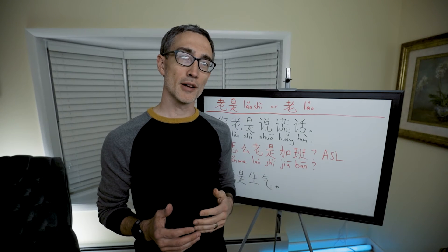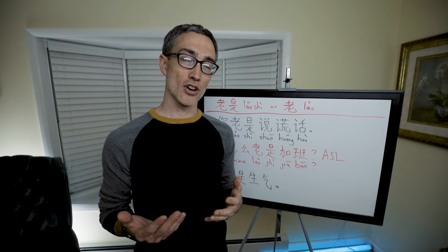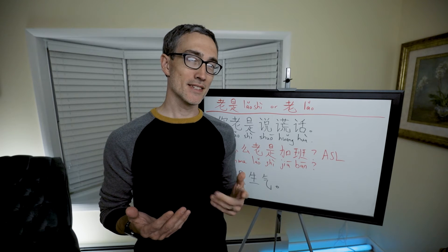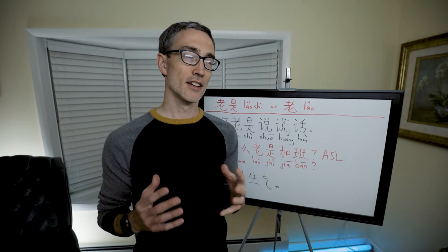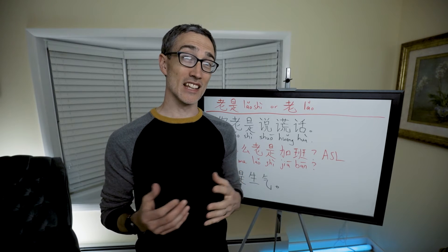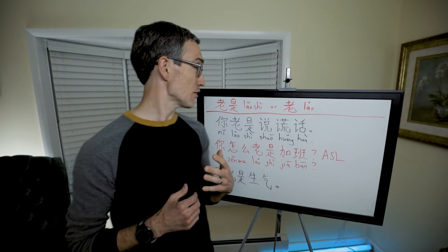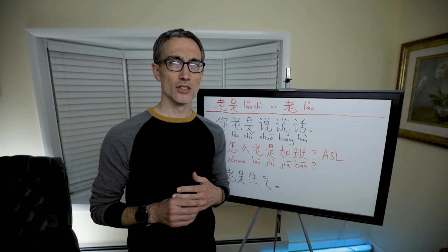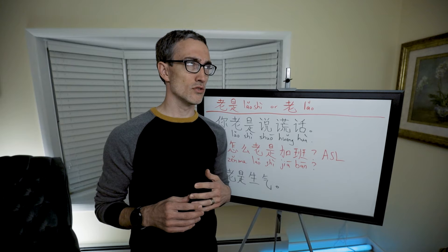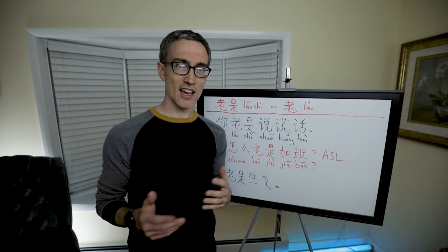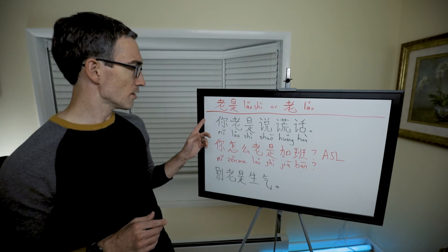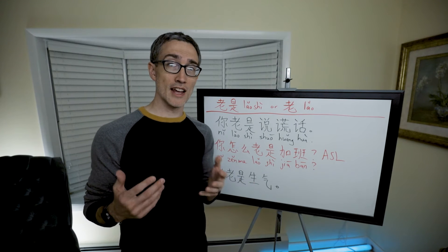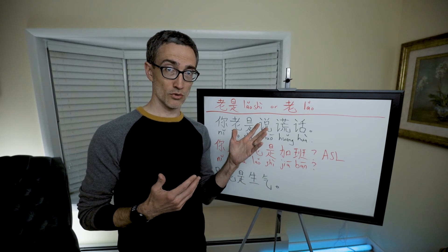In this clip, we're going to talk about another word that means always, but it's basically always, you see what it did there, meaning something negative. It's like if you say to your spouse, you're always lying to me, or you always say things like that, or whatever. So good marriage advice would be to never use this word with your spouse.